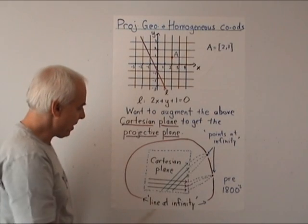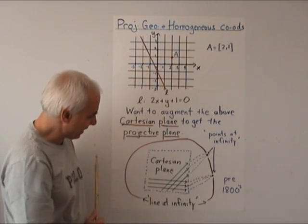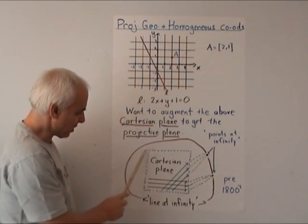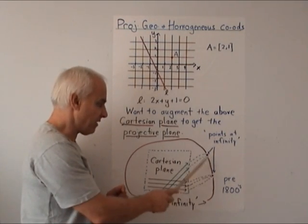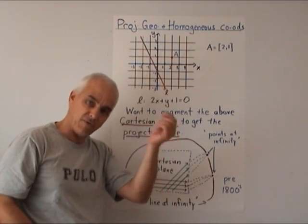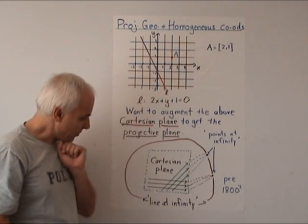In projective geometry, we want to augment this plane by adding points at the horizon. We can see that diagrammatically in this picture here—here's the Cartesian plane we had above, but we want to add points at infinity which correspond to points on the horizon.